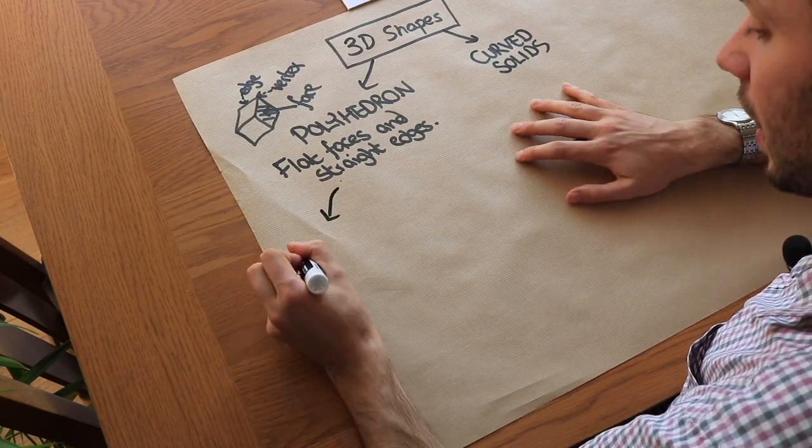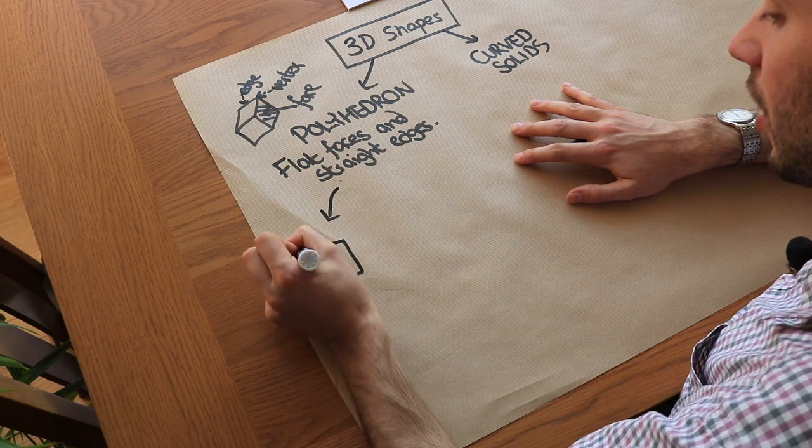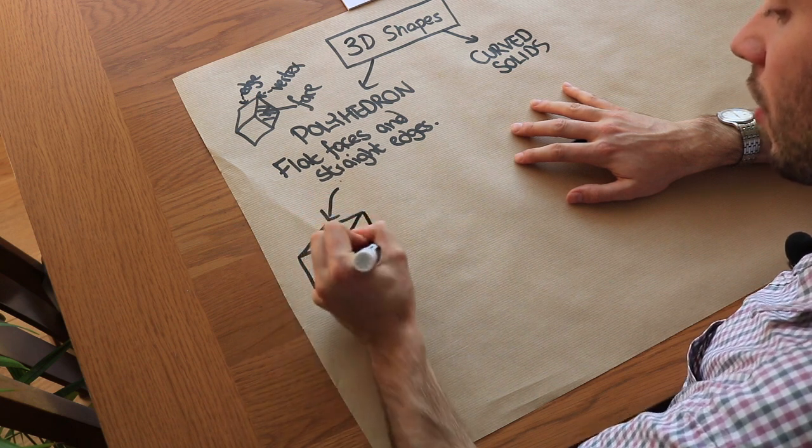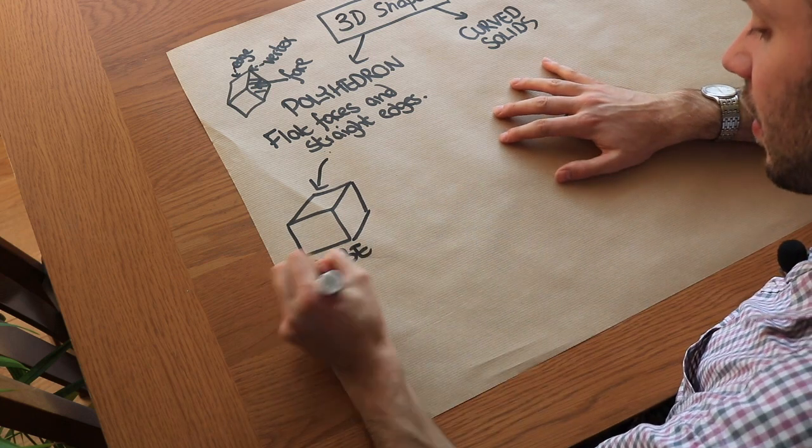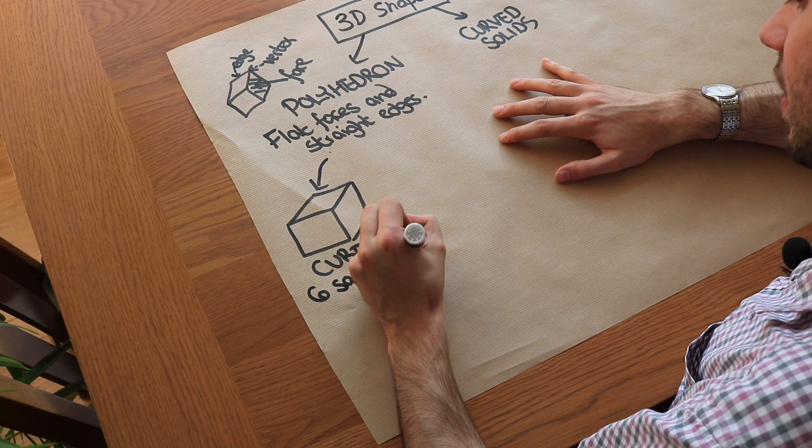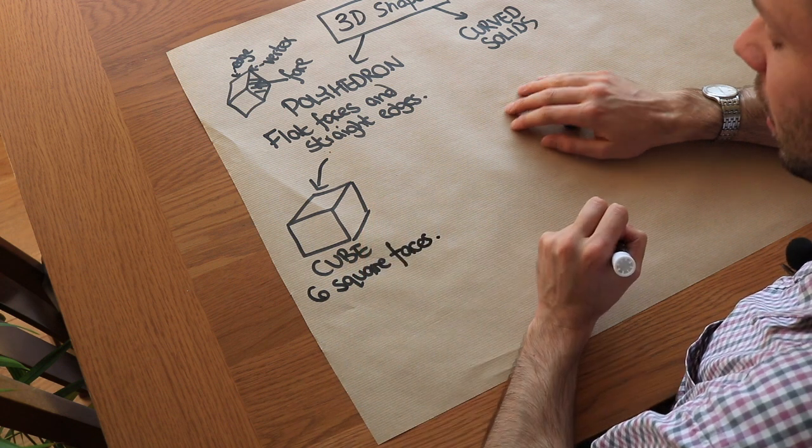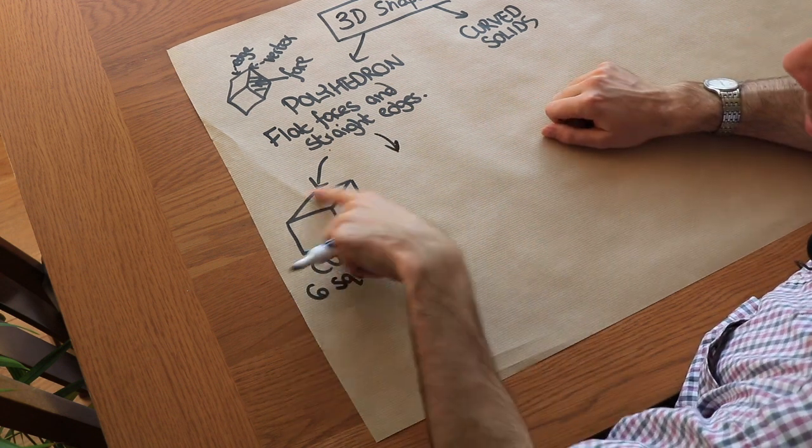Well one obvious shape we have is a cube. So a cube looks like this. And you might think, well what is the definition of a cube? It has six square faces. That is the definition of a cube. So that's like the 3D version of a square.